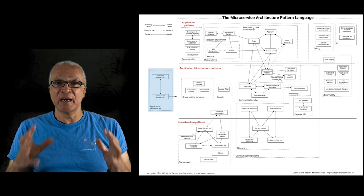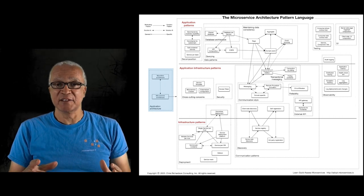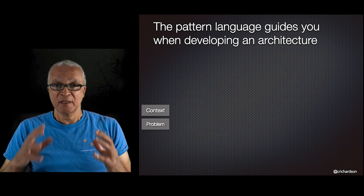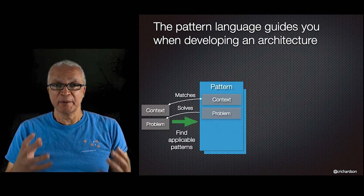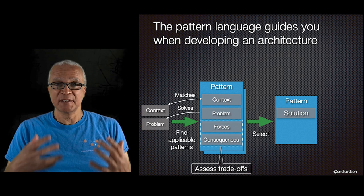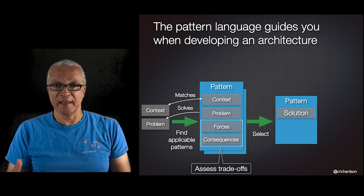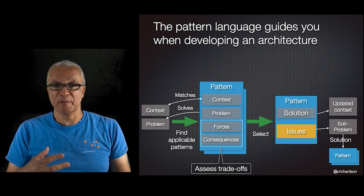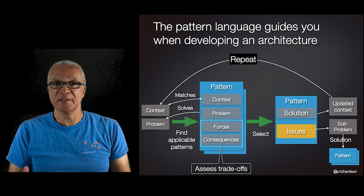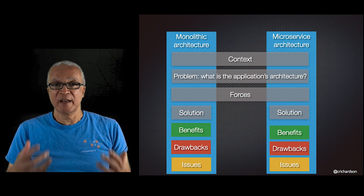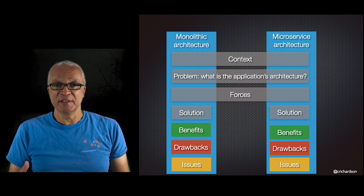The pattern language can be your guide when defining an architecture. You find the applicable patterns, assess the trade-offs of each, select and apply one. That pattern updates the context and creates sub-problems, which you address recursively until you've designed an architecture. The first two patterns are monolithic architecture and microservice architecture — alternative solutions to the same problem.